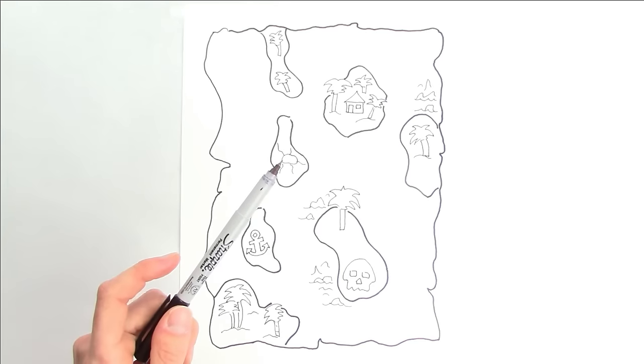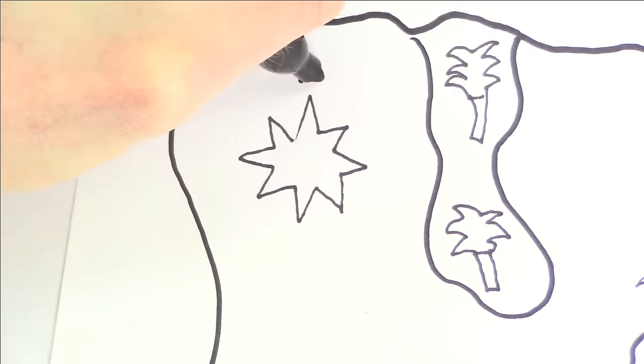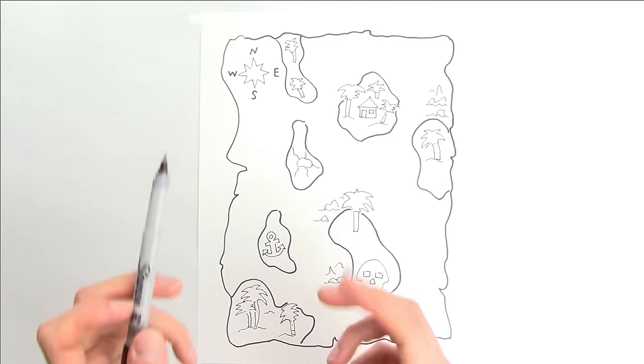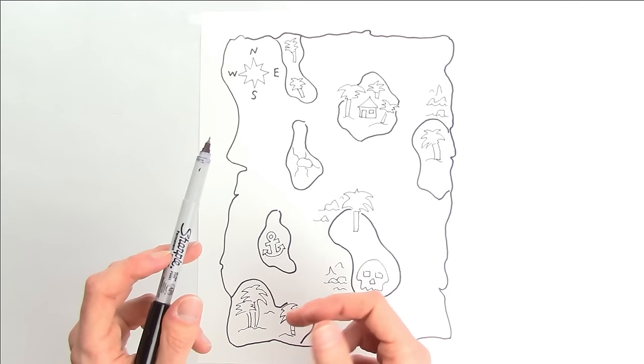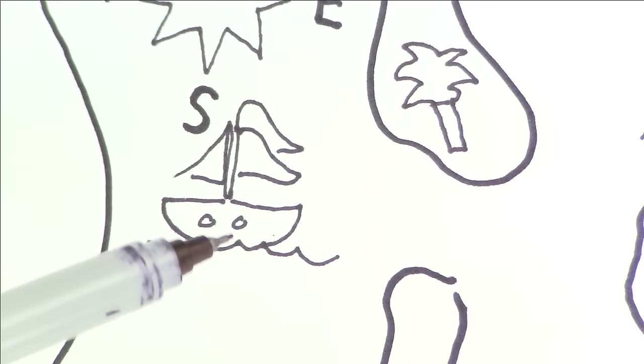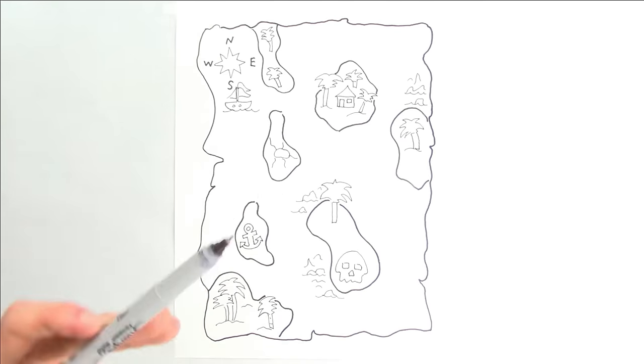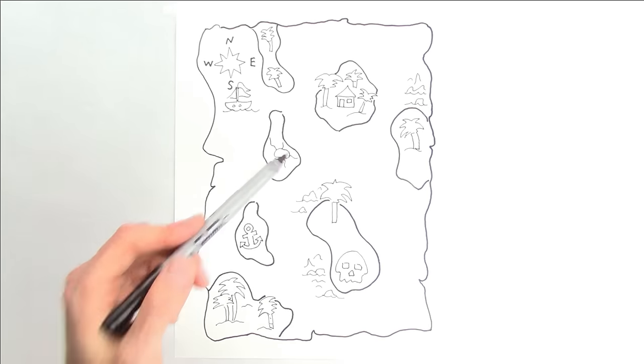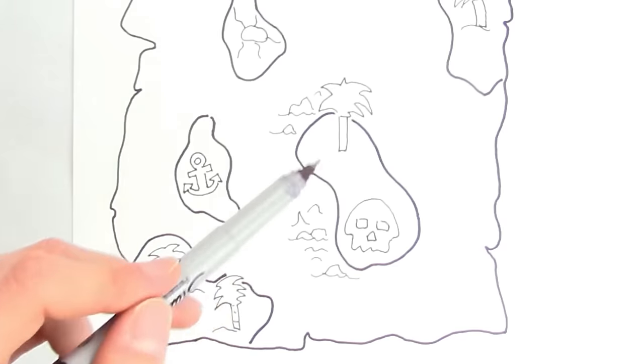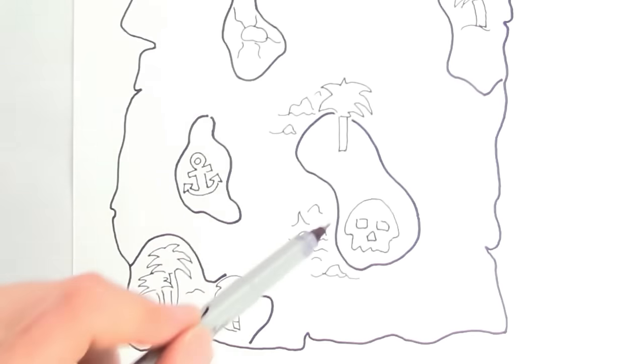For this treasure map, let's start with the paper outline first. We now need a compass to show north, south, east, and west, so let's draw one up here. And let's draw where Captain Glitter's pirate ship is at on this map. So currently, we are located right here. We need to hide the treasure box on one of these islands, and I'm thinking it might be best to hide it on this island between the palm tree and Skull Rock. So let's draw an X to mark the spot.